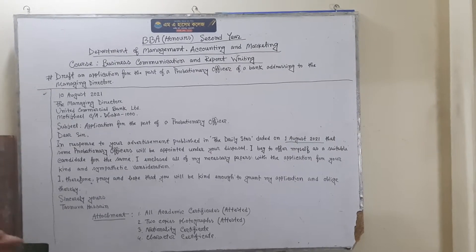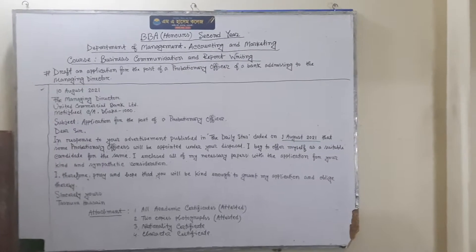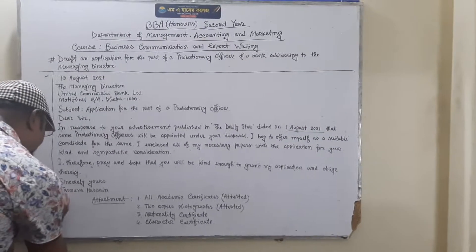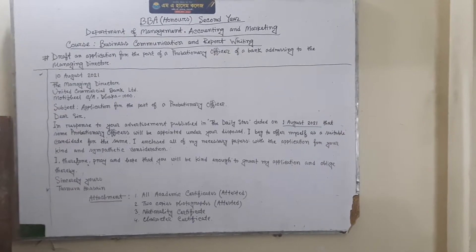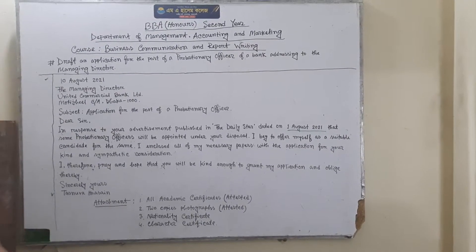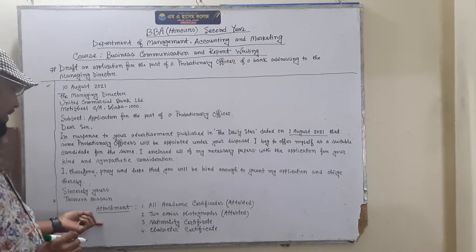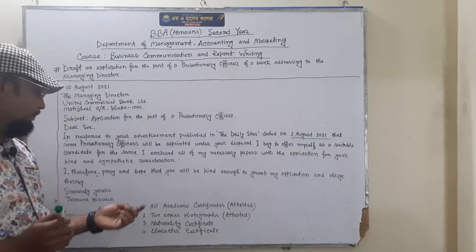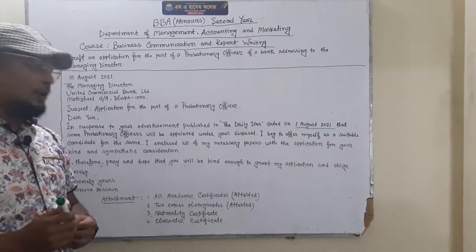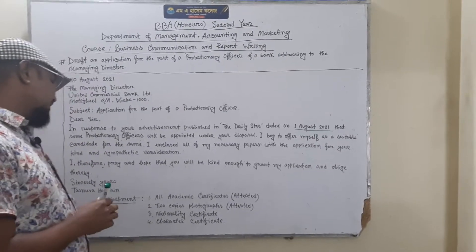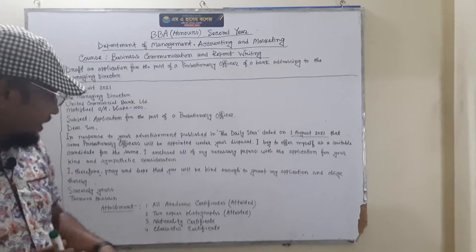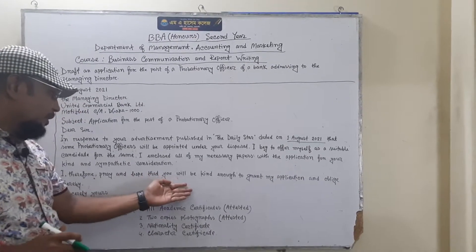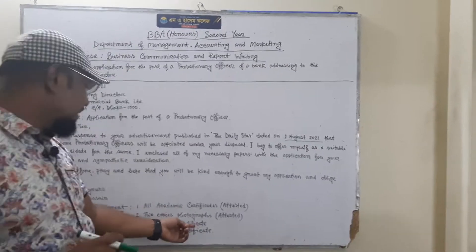Name: Tasnuwa Huseb — this is the name of the applicant candidate. There is an attachment. In this space you should write 'Attachment.' Number one: all academic certificates, and they must be attested. Number two: two copies of photographs, also attested. Number three: nationality certificate — this one does not need to be attested.